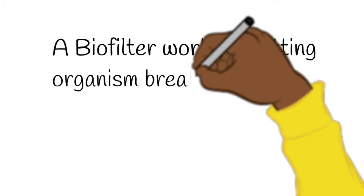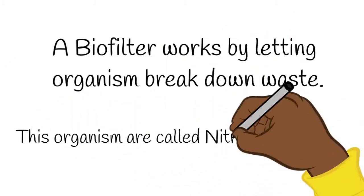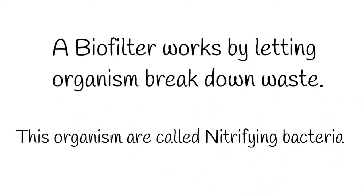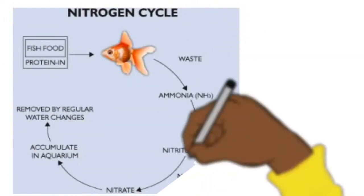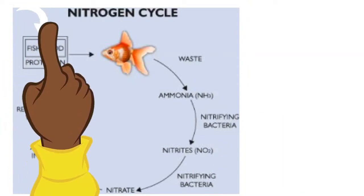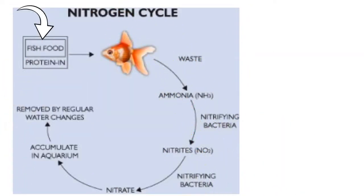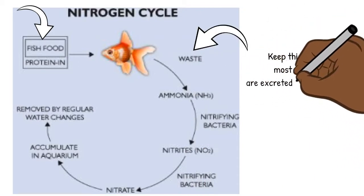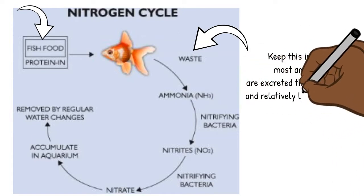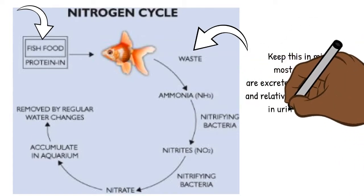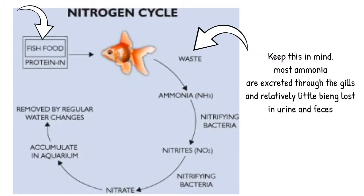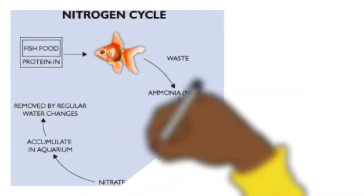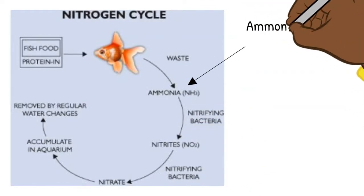A biofilter works by letting organisms break down the waste. These organisms are called nitrifying bacteria in the nitrogen cycle. As we feed our fish a high-protein diet, it also produces waste. Keep this in mind: most ammonia is excreted through the gills, with relatively little being lost in urine and feces. Ammonia is toxic to the fish.